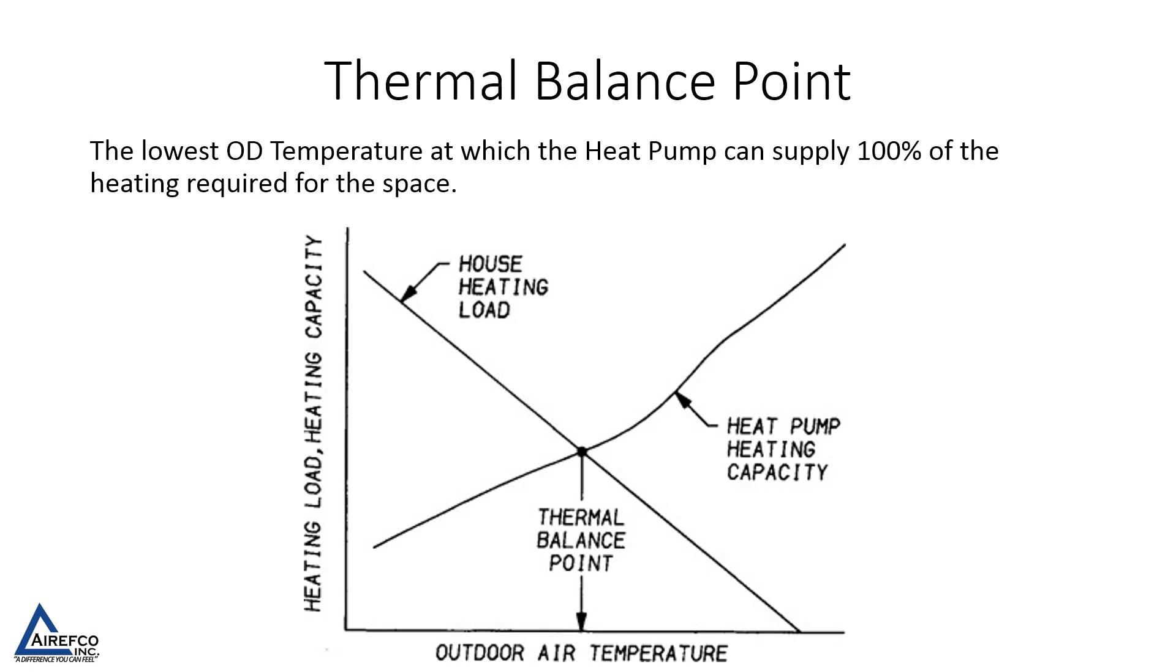This is the lowest outdoor temperature at which the heat pump can supply 100% of the heating required for the space. Where the heat load line and the capacity line of the heat pump intersect is the thermal balance point for that particular unit.